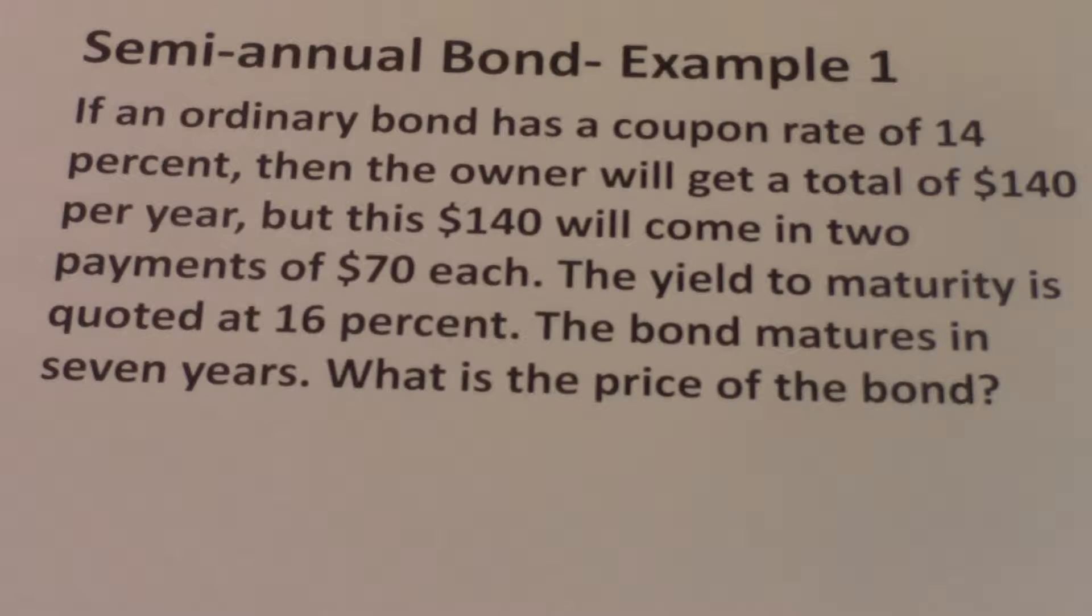But this $140 will come in two payments of $70 each. So if this is a semi-annual bond, then you will determine the coupon payment, the annual coupon payment, and divide it by two. And the amount that you get, in this case $70, you will receive that $70 every six months. So typically, you get $70 at the beginning of January, and then the next $70 will be paid at the beginning of July.